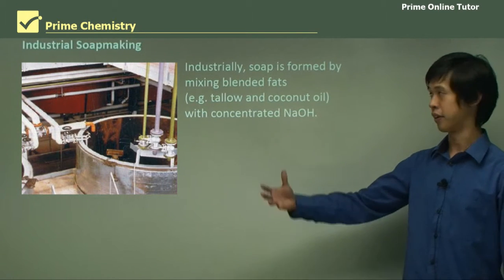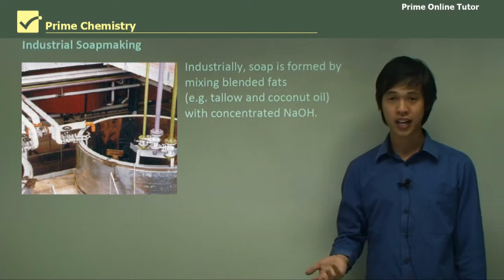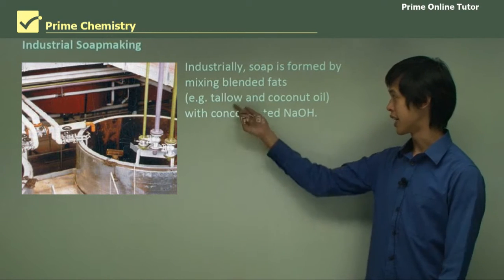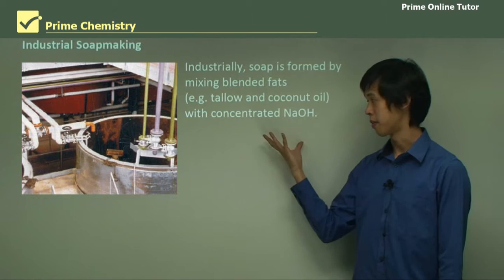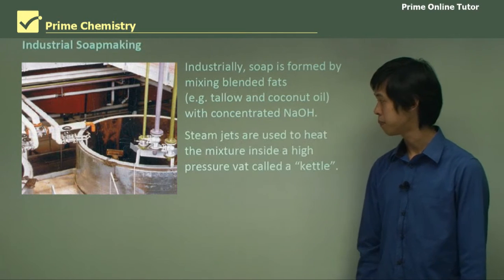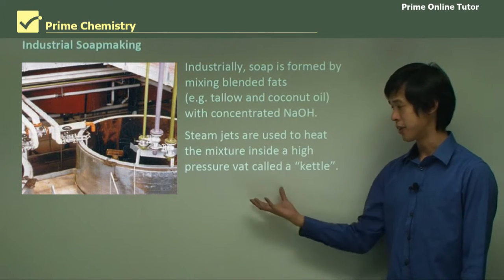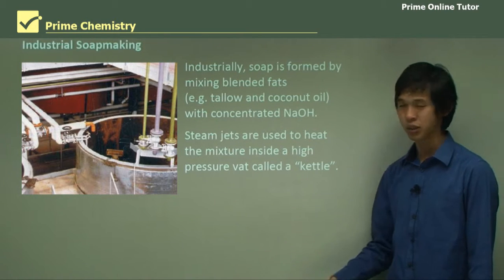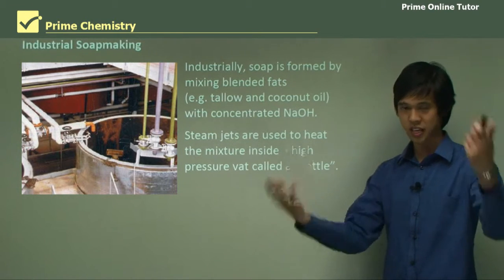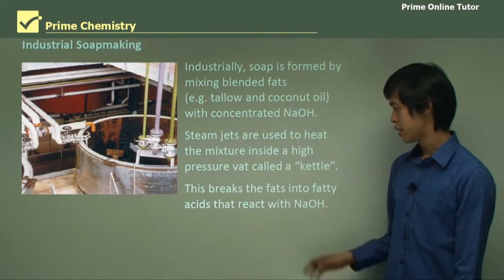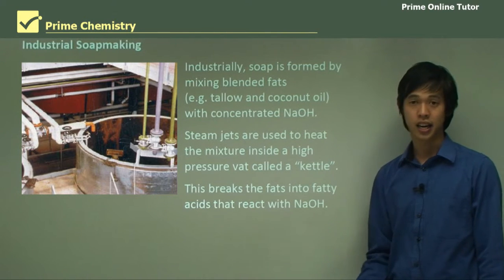Industrial soap making: industrial soap is formed by mixing blended fats, which could be tallow or coconut oil, with concentrated sodium hydroxide. Steam jets are used to heat the mixture inside a high-pressure vat called a kettle — just a container. This breaks the fats into fatty acids that react with the NaOH.